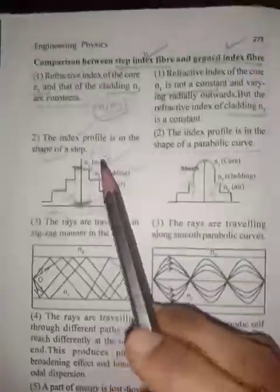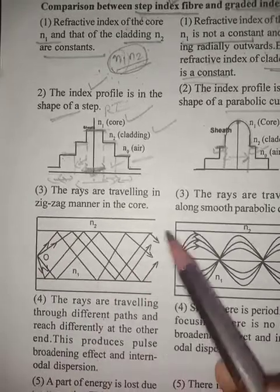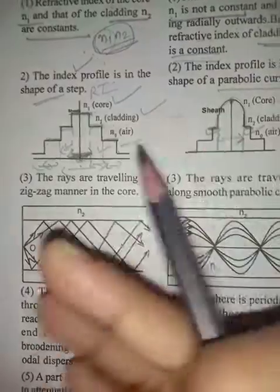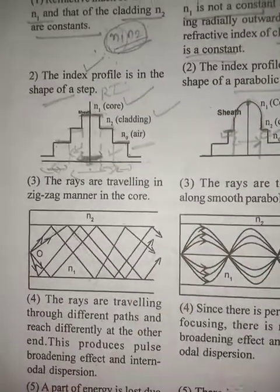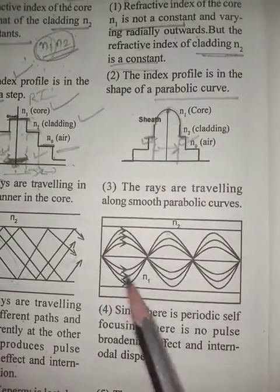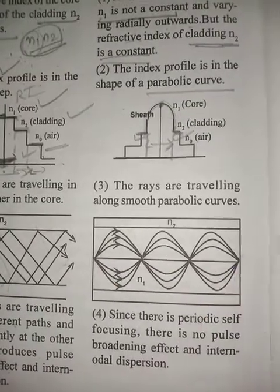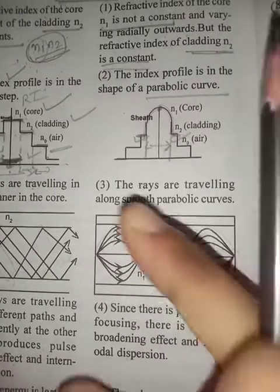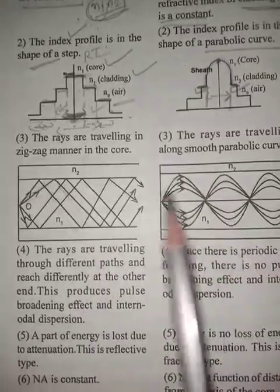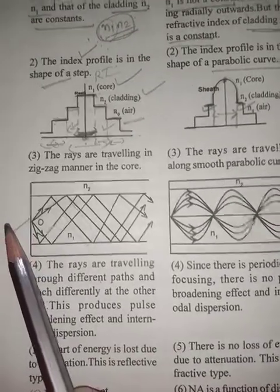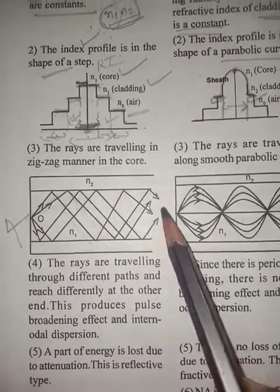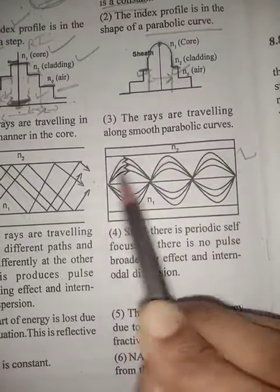The third point is light travel behavior. In step index fiber, light travels in a zig-zag manner — one ray undergoes total internal reflection, moves, reflects again, and so on. All rays travel in a zig-zag manner. In graded index fiber, rays travel in a wave-like or curved path rather than zig-zag.